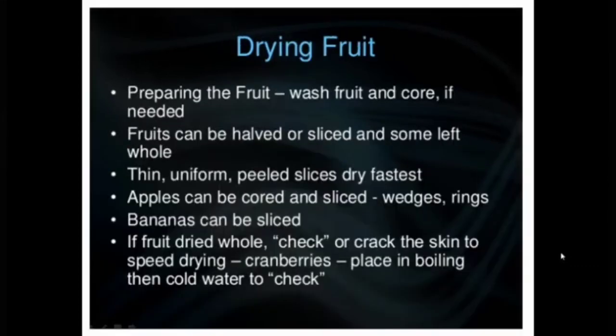When preparing fruits, wash them and core if needed. Fruits can be halved, sliced, or left whole — thin, uniform, peeled slices dry fastest. Apples can be cored and sliced into wedges or rings. Bananas can be sliced. If fruit dries old, check or crack the skin to speed drying. For cranberries, place them in boiling then cold water to check.